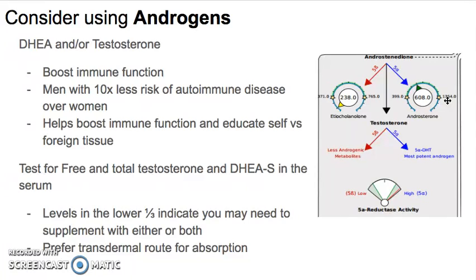Number two is to consider using androgens — specifically DHEA and/or testosterone. Testosterone is pretty awesome if you have an autoimmune disease. If you've ever been around patients with Hashimoto's or autoimmune diseases in general, you'll notice that almost all of them are women. Men have a much lower risk of developing autoimmune disease, and part of that reason is felt to be due to testosterone. When you check these patients with Hashimoto's, you start to see trends — almost all of them have low free and total testosterone and low DHEA levels.